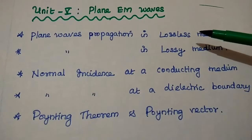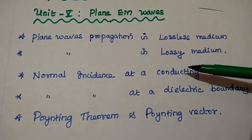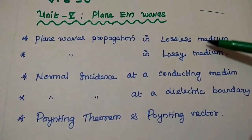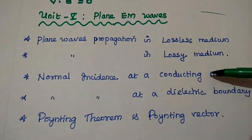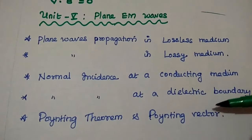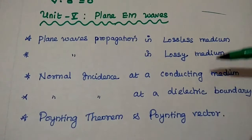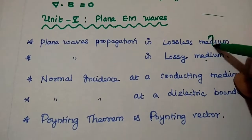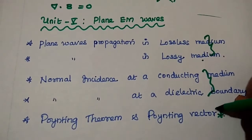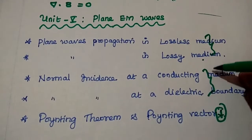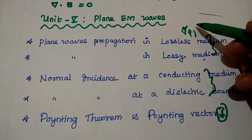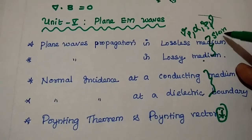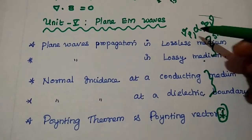The last unit is plane electromagnetic waves, with three important topics: plane wave propagation in lossless medium, plane wave propagation in lossy medium — expect one question from either of these — and normal incidence at a conducting boundary and dielectric boundary. The Poynting vector is also very important, with expected numerical problems. Key quantities include phase velocity, group velocity, attenuation constant alpha, phase shift constant, intrinsic impedance, and skin depth. The skin depth, attenuation constant, and phase velocity are important two-mark topics.